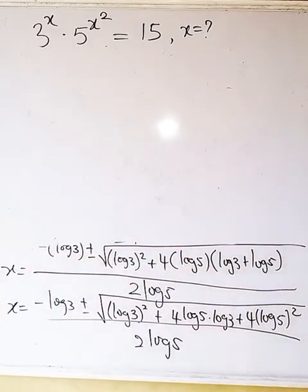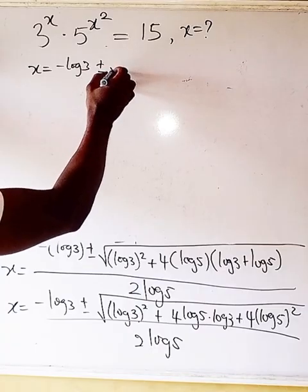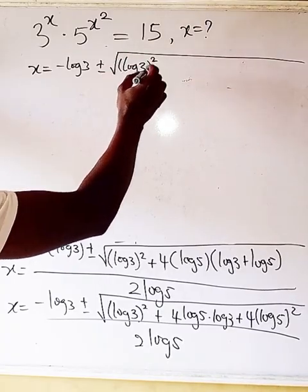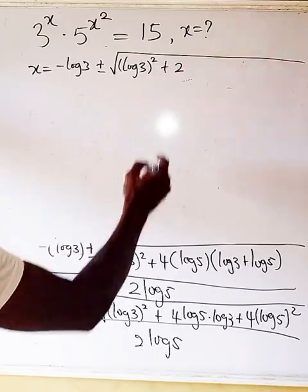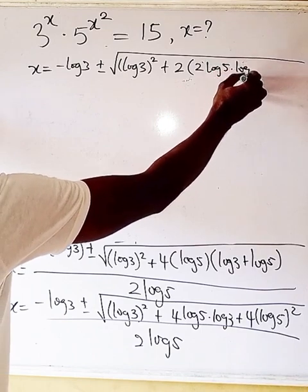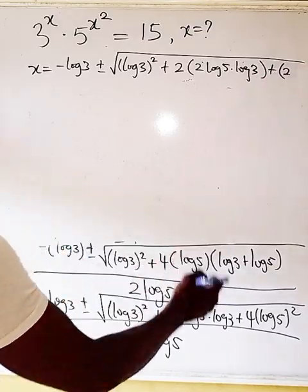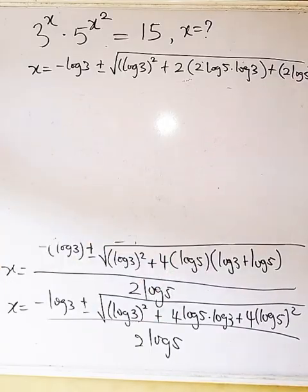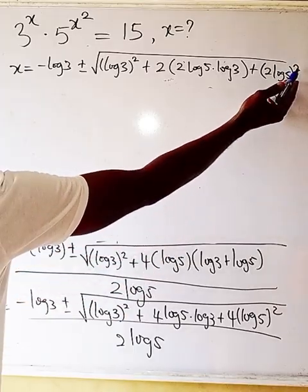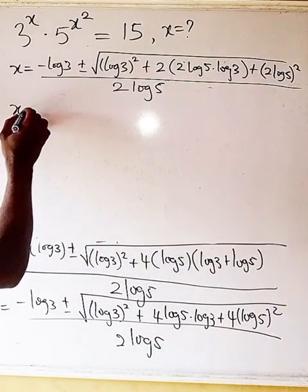We can rewrite x as minus log 3 plus or minus the square root of (log 3)² + 2·(2·log 5)·log 3 + (2·log 5)². Notice that (2 log 5)² equals 4·(log 5)², confirming this is correct. So the expression under the radical is a perfect square: (log 3 + 2·log 5)².